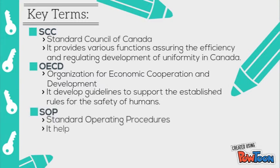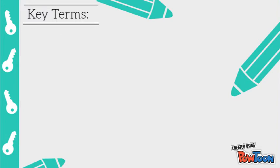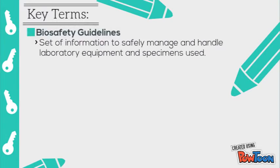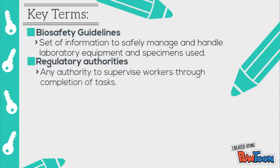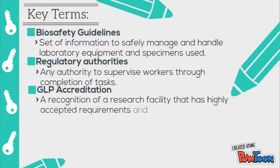SOP, Standard Operating Procedures — procedures which help workers ensure proper methods are used. Biosafety Guidelines set out information to safely manage and handle laboratory equipment and specimen use. Regulatory authorities are any authority to supervise workers through completion of tests. GLP Accreditation is recognition of a research facility that has highly accepted requirements and standards.